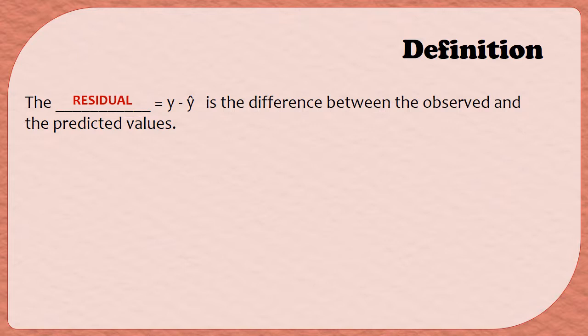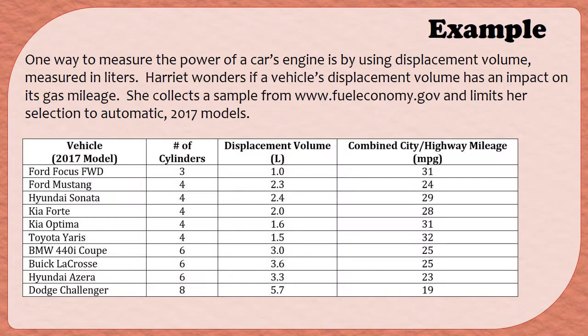So let's do some examples of finding the residual. Remember that throughout these module 4 videos we are looking at an example of data collected by Harriet concerning the displacement volume and the combined city and highway gas mileage of a variety of vehicles from 2017. We have previously determined that the displacement volume is the x variable and the mileage is the y variable. So we'll be using that when we find our residuals.